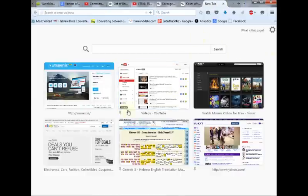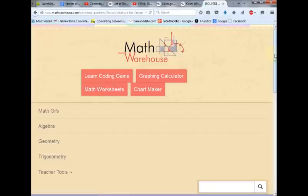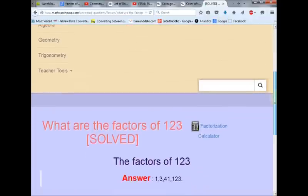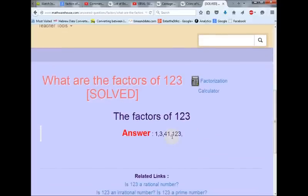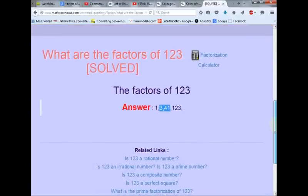So the factors of 123 are 3 and 41. Remember the American coinage 322 years ago added up to $19.41 and a half, actually, to be exact.